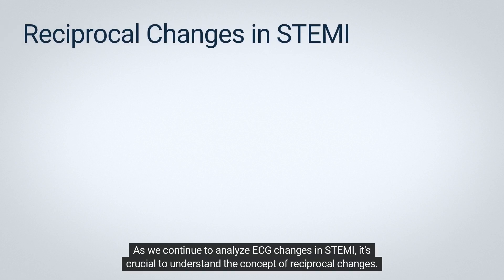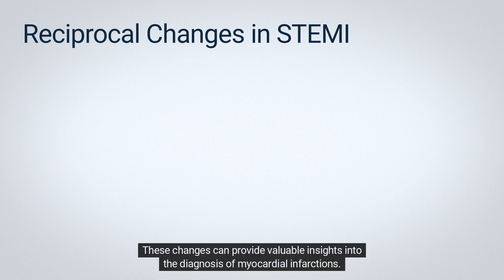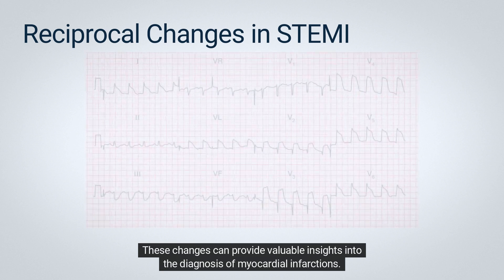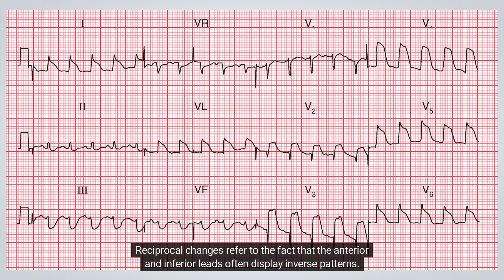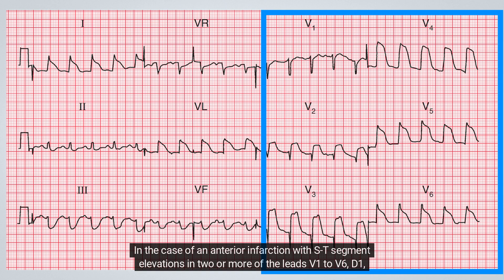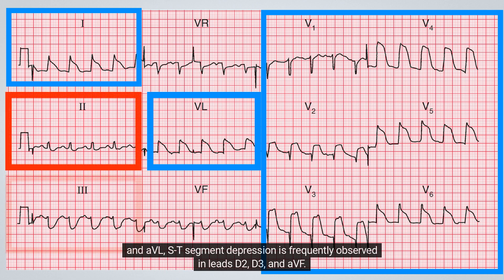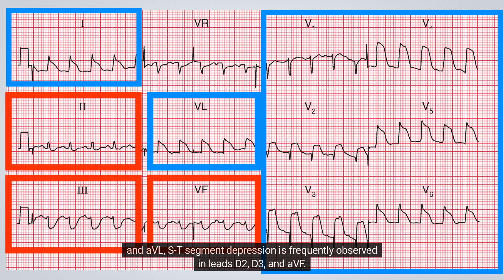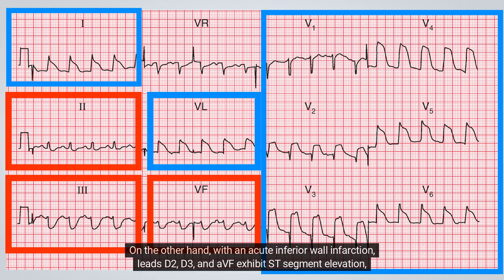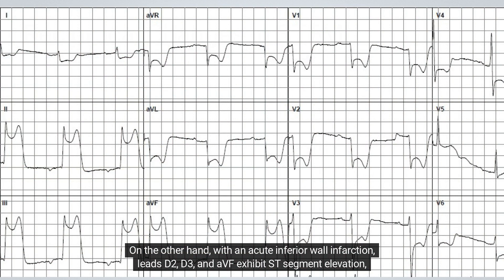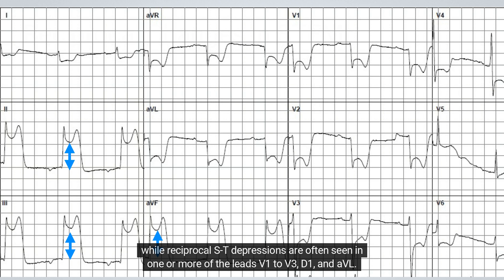As we continue to analyze ECG changes in STEMI, it's crucial to understand the concept of reciprocal changes. These changes can provide valuable insights into the diagnosis of myocardial infarctions. Reciprocal changes refer to the fact that the anterior and inferior leads often display inverse patterns. In the case of an anterior infarction with ST-segment elevations in two or more of the leads V1 to V6, D1, and aVL, ST-segment depression is frequently observed in leads D2, D3, and aVF. On the other hand, with an acute inferior wall infarction, leads D2, D3, and aVF exhibit ST-segment elevation, while reciprocal ST depressions are often seen in one or more of the leads V1 to V3, D1, and aVL.